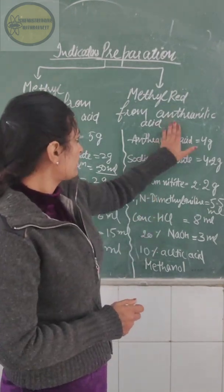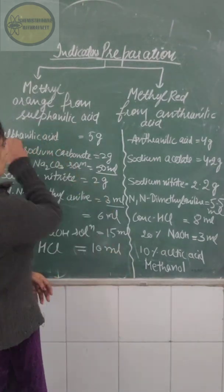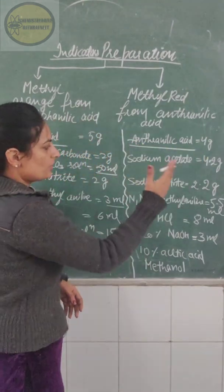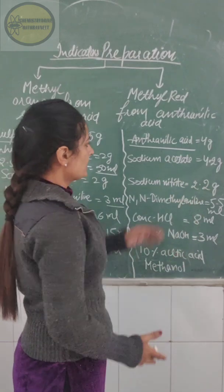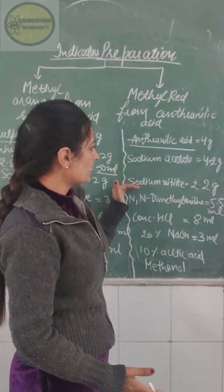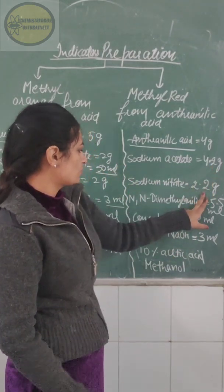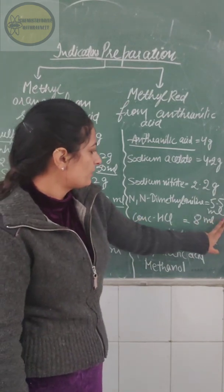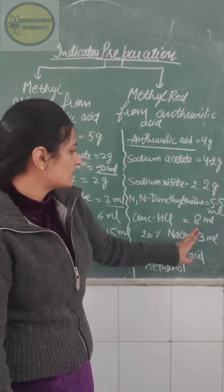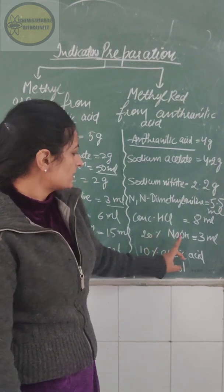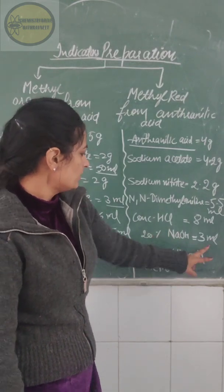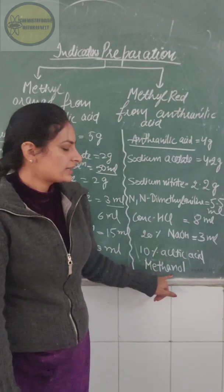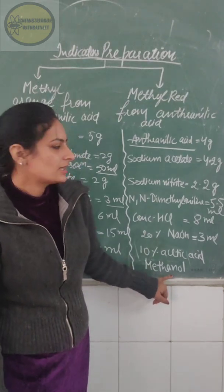Similarly for the preparation of methyl red, instead of sulfanilic acid you will need anthranilic acid, near about 4 g. Then sodium acetate 4.2 g, sodium nitrate 2.2 g, dilute HCl 5.5 ml, concentrated HCl 8 ml, 20% NaOH solution 3 ml, and 10% HCl solution in methanol for recrystallization.